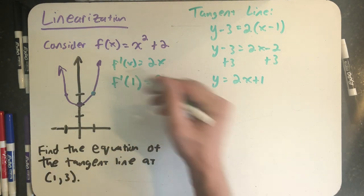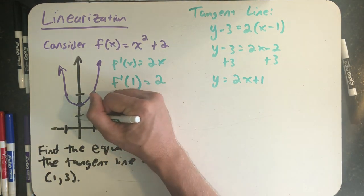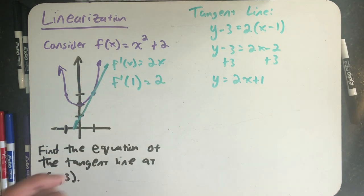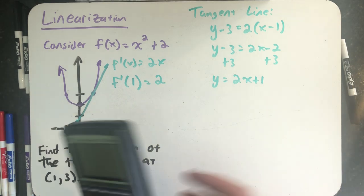My tangent line goes through that point. I see the y intercept is 1, so I think my tangent line would look something like this. Let's look at it in a little more detail.